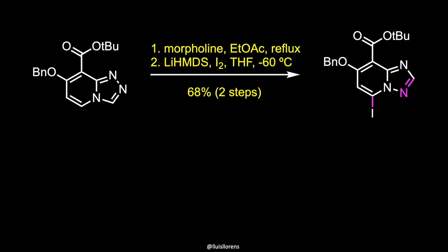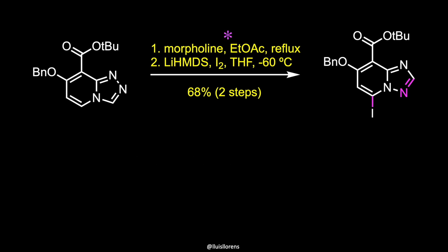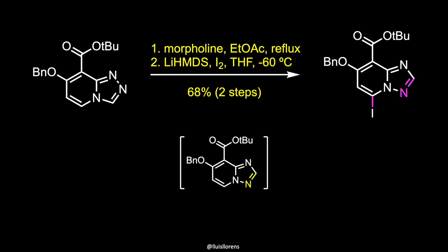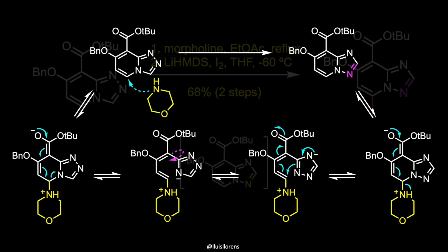In order to secure the regiochemistry of the triazolopyridine derivative, the substrate was subjected to a Dimroth rearrangement in the presence of morpholine in refluxing ethyl acetate. Even though a described mechanism for the Dimroth rearrangement under these particular conditions couldn't be found, a plausible mechanism would involve the attack of the heterocyclic ring by the nucleophile, elimination of the triazole subunit, followed by a 180-degree rotation about a single bond, and subsequent ring re-closure and elimination of morpholine to deliver the desired triazolopyridine, which was obtained in an outstanding 97% yield.